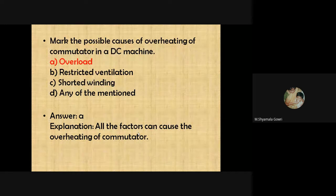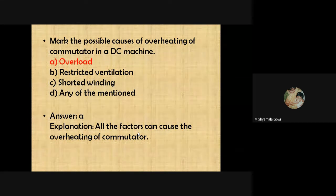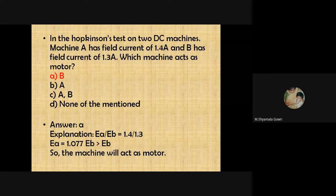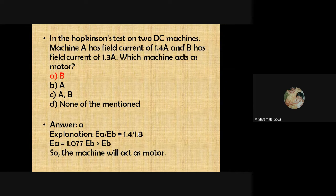The most possible cause of overheating of the commutator in a DC machine is overload. In a Hopkinson test on two DC machines — machine A has a field current of 1.4 amps and machine B has a field current of 1.3 amps — machine B acts as a motor, because in a Hopkinson test the generator has higher field current and the motor has lower field current.